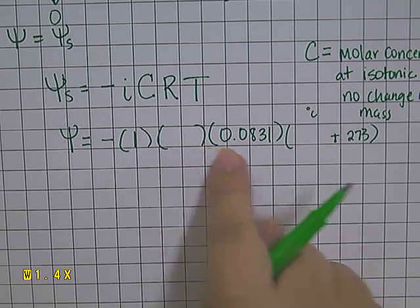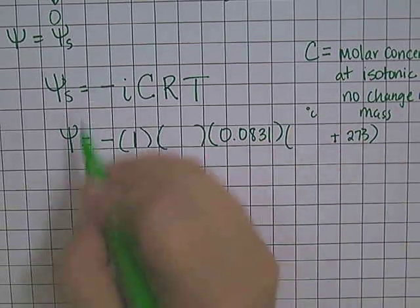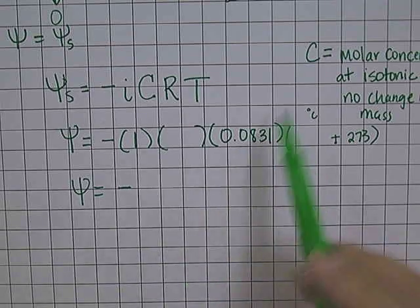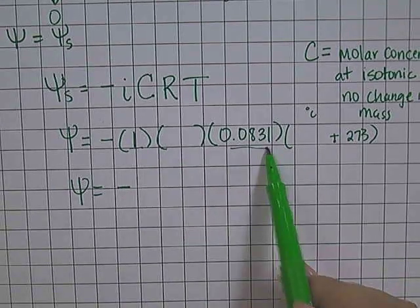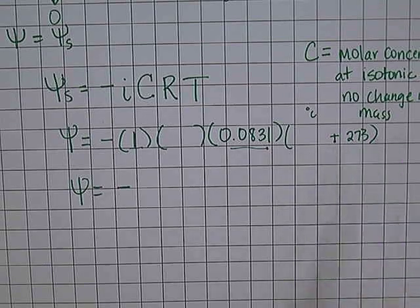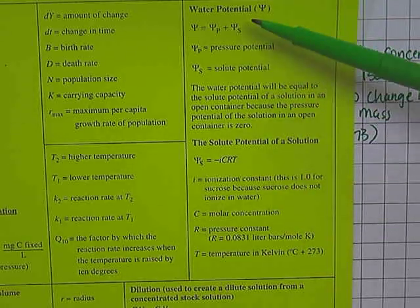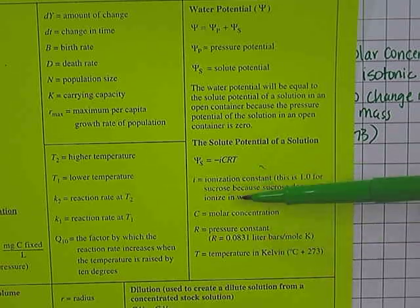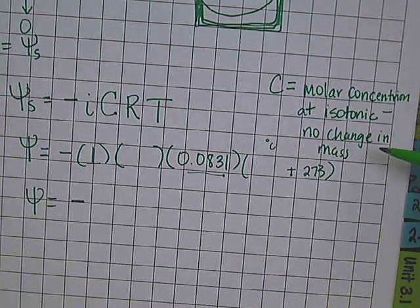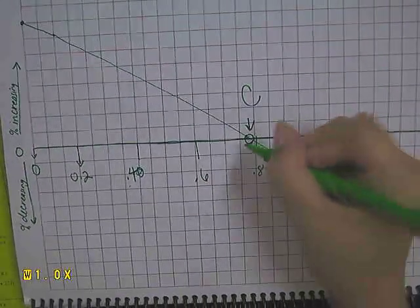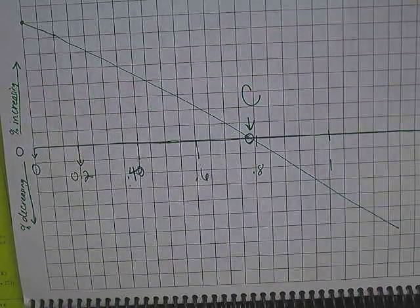At this point, you should have all the values in your equation and can calculate your solute potential. Remember, this will be a negative value. The 1, the 0.0831, and your temperature will typically be given to you in a word problem or a grid. The only thing you have to remember is that C is the molar concentration at the isotonic point — when there's no change in mass — which you find using the best fit line and seeing where it crosses the zero axis. Thanks for watching.